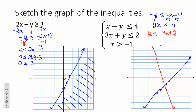Last inequality: x is greater than or equal to negative 1. Is that a vertical or horizontal line? Vertical line. Solid or dashed? So we're going to be at x equals negative 1. Dashed line. Where is x going to be bigger than negative 1? On the right side — draw a little arrow to remind yourself you're shading that way.